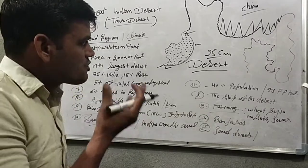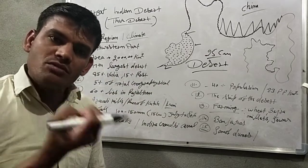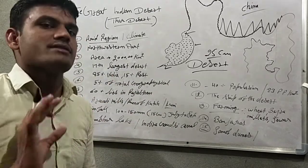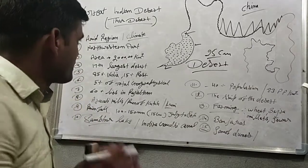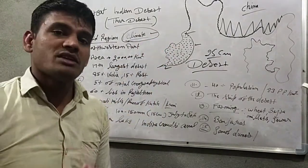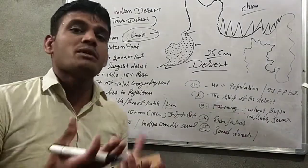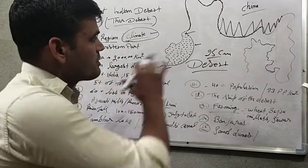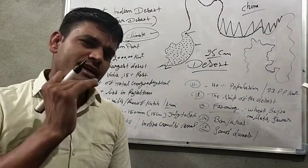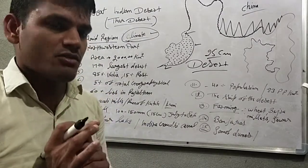Arid means areas where moisture — in the air or land — is less. The climate is hot. So we will discuss about how the desert's formation happened. The climate is hot and it is a radial region. Different scholars have different views about the Indian desert formation.